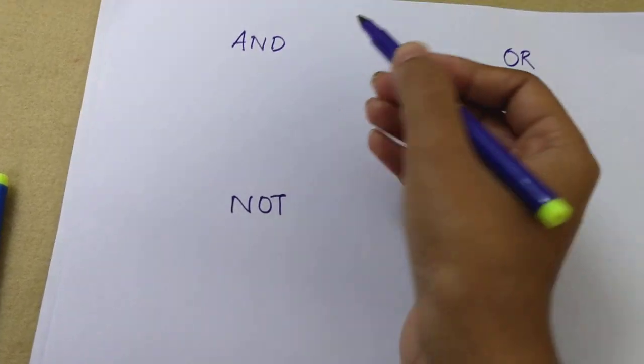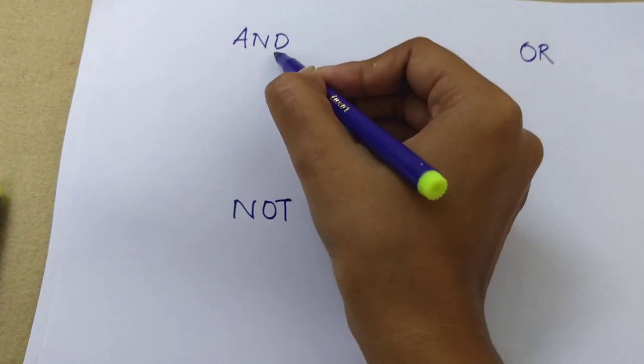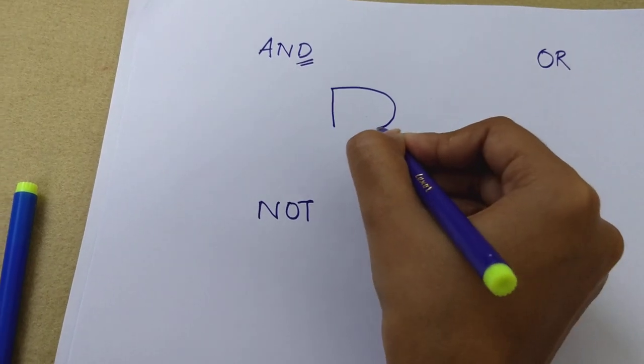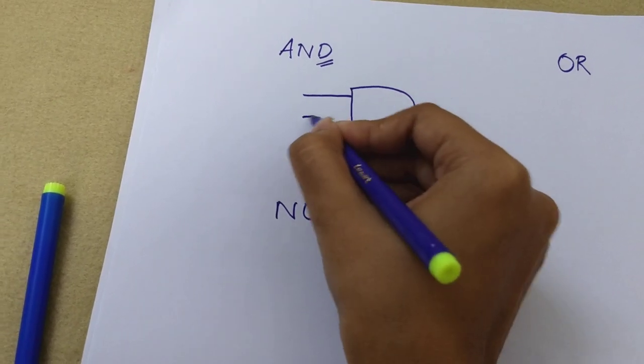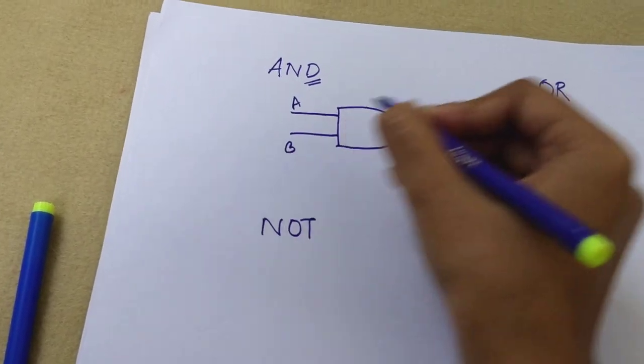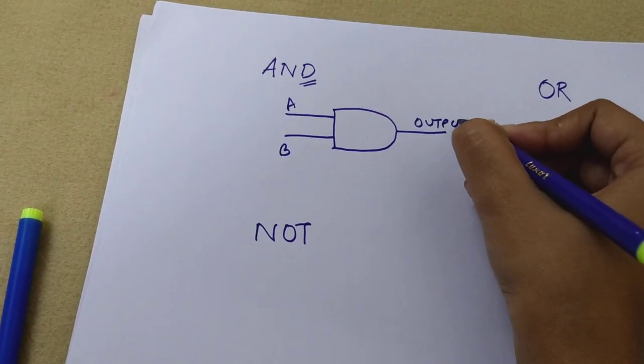The symbol for the AND gate - you see the D in AND. If you write the D a little bigger and add two terminals for input and one for output, these are the inputs, this is the output. This is your symbol for the AND gate.